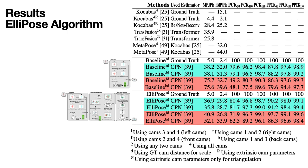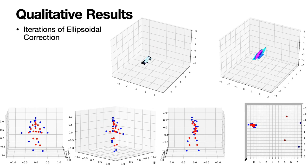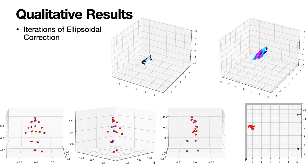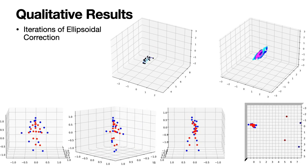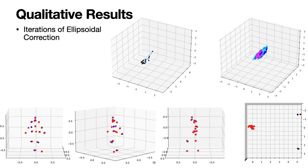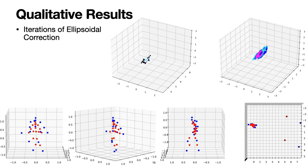Our results show that ElliPose is capable of improving the results over a baseline approach consisting of only stage 1. This becomes especially clear for close camera pairs, here marked in red. Here we can see how the highly distorted pose at the top gets undistorted over multiple iterations of stage 2 at the bottom. The graphic at the bottom right shows the top perspective, also containing the camera positions.